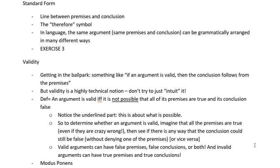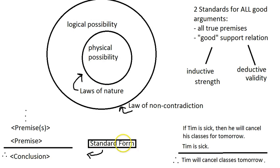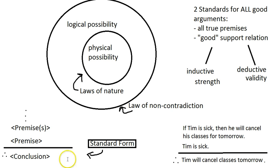Definitely this is a video to watch. So — standard form. Let's do a quick reminder. I've got some notes prepared on my little makeshift whiteboard in Microsoft Paint. Here's standard form. We're arranging the parts of arguments. An argument is just a claim supported by at least one other claim. The claim that's getting support we call the conclusion; we put it below the line with the therefore symbol.